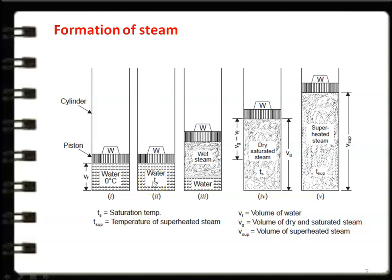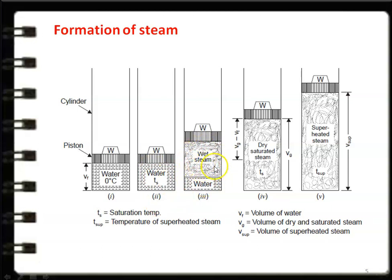The water quantity decreases, and wet steam appears above the water. As heat is continuously added, water keeps evaporating. At a particular point, only steam remains inside the cylinder — this is called dry saturated steam. Further heating raises the steam temperature and it becomes superheated steam. So: water at 0°C on heating reaches saturation temperature, then converts to wet steam, then dry saturated steam, and finally superheated steam.